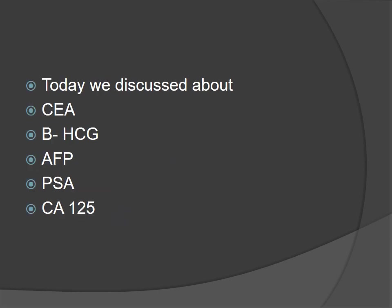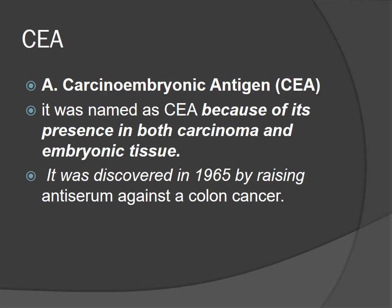Today we will discuss CEA (carcinoembryonic antigen), beta-HCG, AFP, PSA, and CA-125. CEA was named because of its presence in both carcinoma and embryonic tissue. It was discovered in 1965 using antiserum raised against colon cancer.